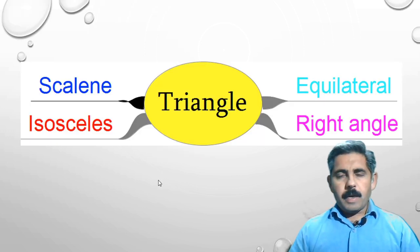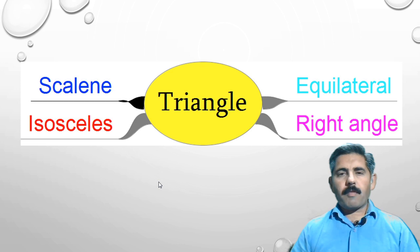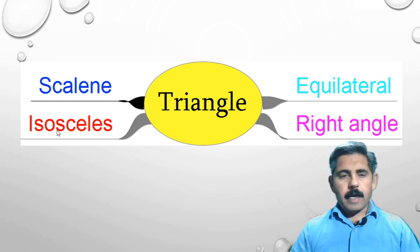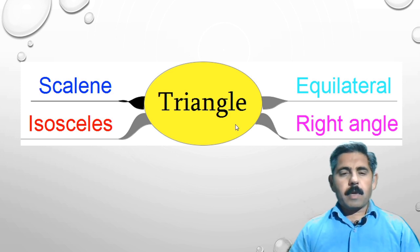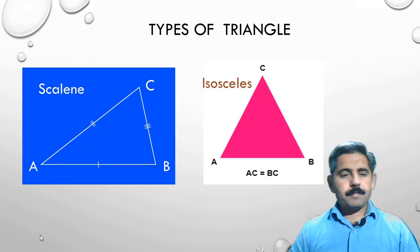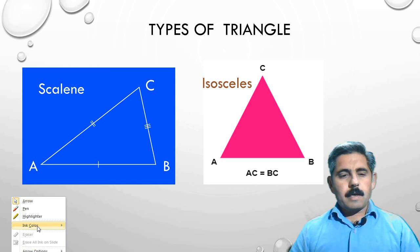How many types of triangles are there? There are 4 types of triangles: scalene, isosceles, equilateral, and right angle.